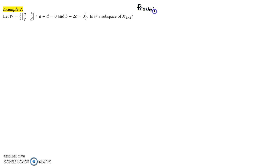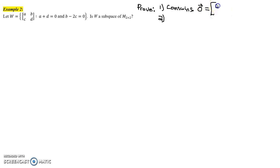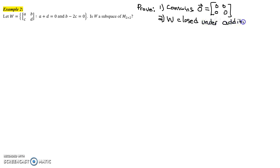There's a theorem that says to show that this thing is a vector space, we really just have to show: one, that it contains the zero vector — and exactly what the zero vector is varies depending on the space you're working in. In this case, working with a collection of 2×2 matrices, the zero vector is a 2×2 matrix where all entries are zero. We also need to show that this subset W is closed under addition, and closed under scalar multiplication.